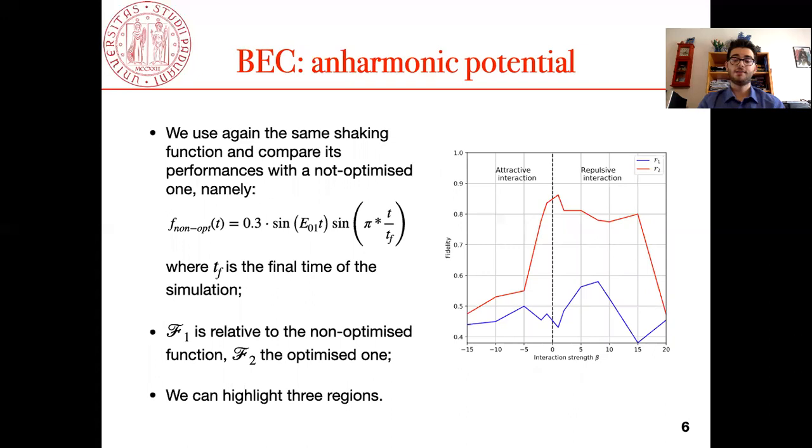Instead in the anharmonic case we want to analyze the difference between using an optimized shaking function, the one described above, and a non-optimized one which is this one. We see that the results are really different in this graph of fidelity with respect to interaction strength, and we can also focus on three different zones.